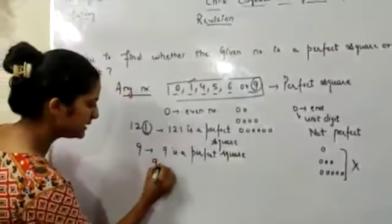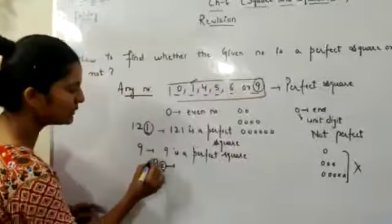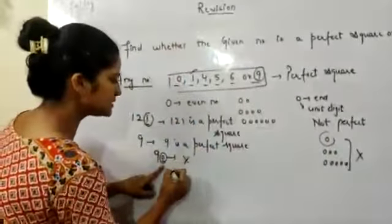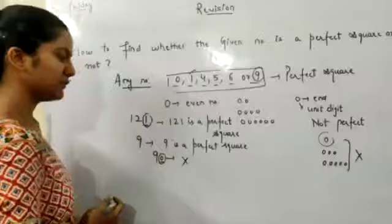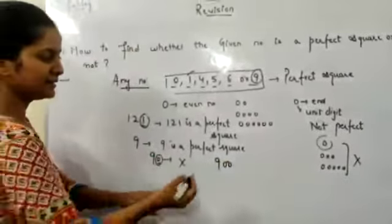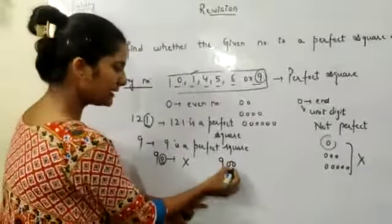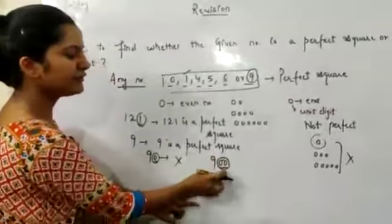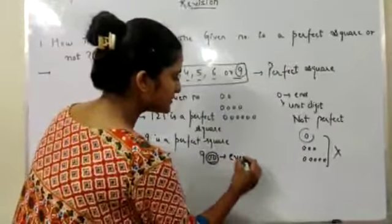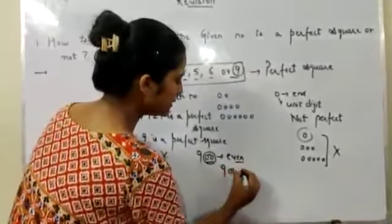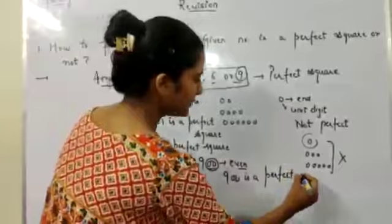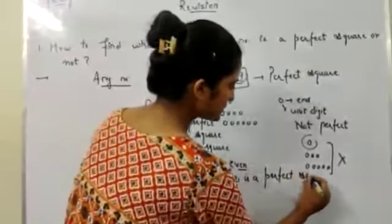Next, 90 — here we have only 1 zero, which means an odd number of zeros, so 90 is not a perfect square. If we have 900 — how many zeros are here? We have 2 zeros, which is an even number of zeros, so 900 is a perfect square.